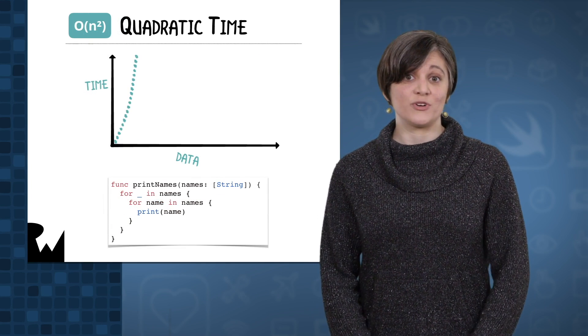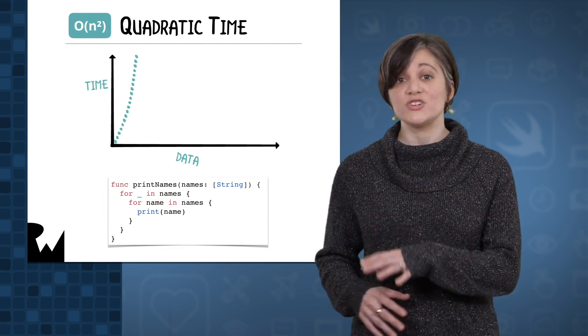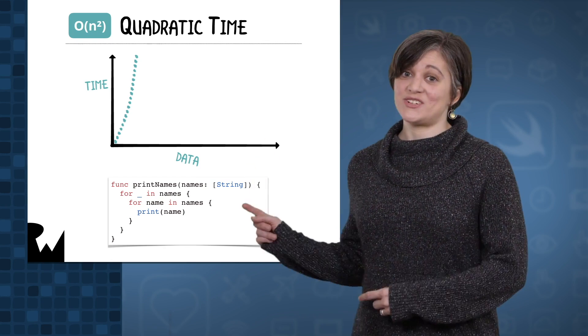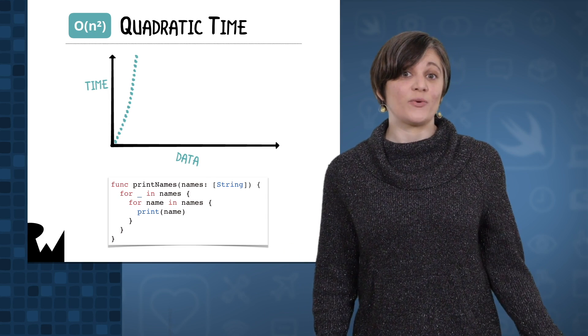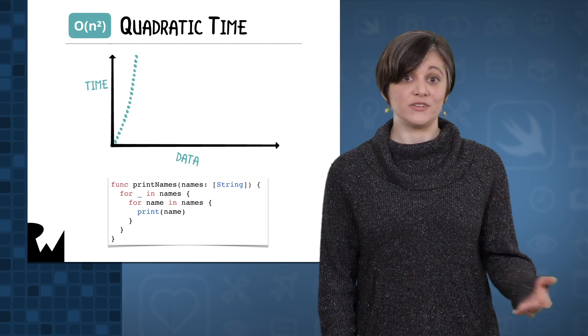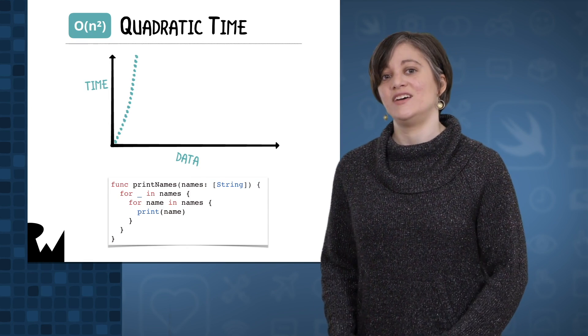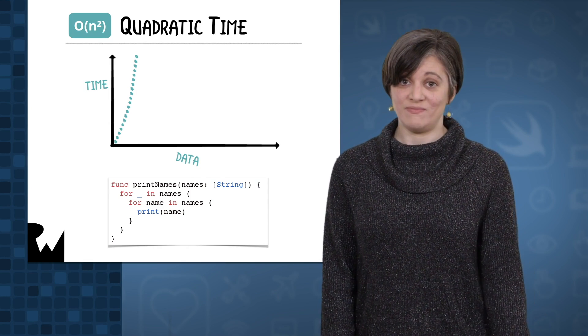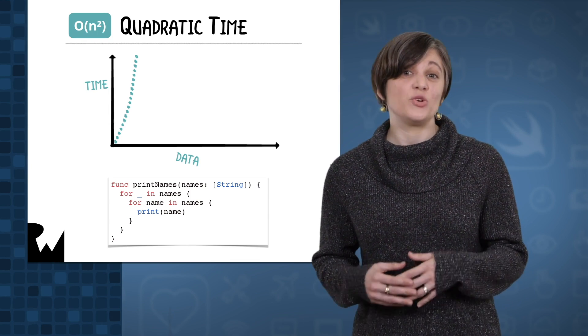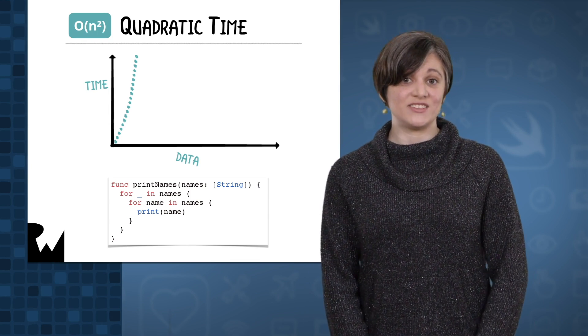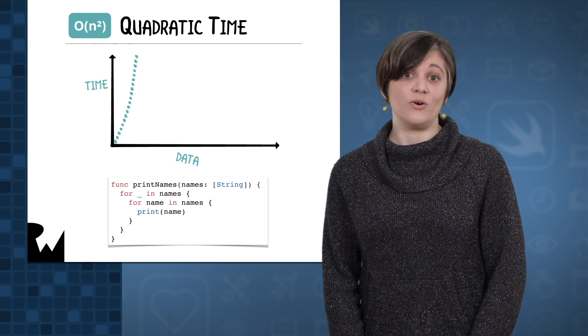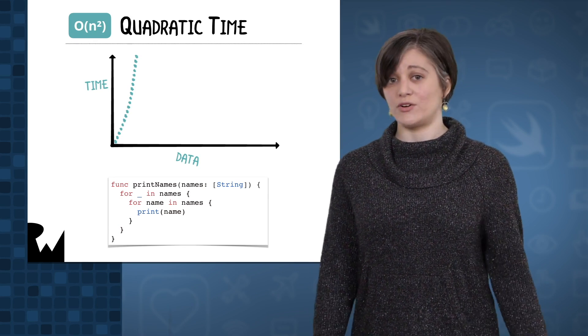Quadratic time complexity refers to an algorithm that takes time proportional to the square of the input size. This function prints out all of the names in the array for every name in the array. So if you have 10 names, it will print out all 10 names 10 times. That's 100 print statements. You can see how an algorithm with this time complexity could quickly run out of control as the data size increases. The Big O notation for this one is big O of n squared, and it's often just referred to as n squared.